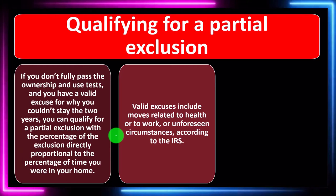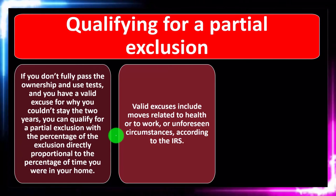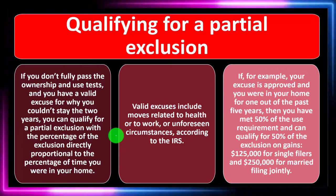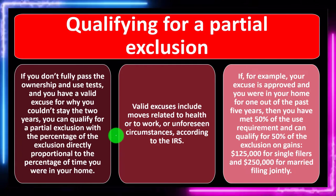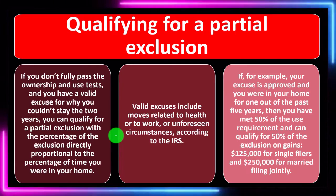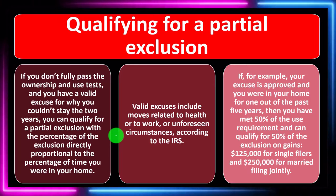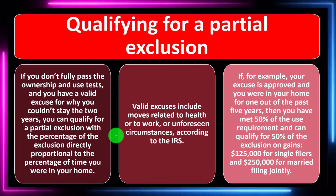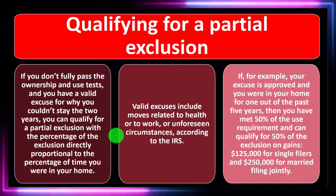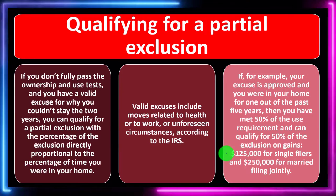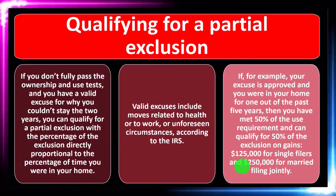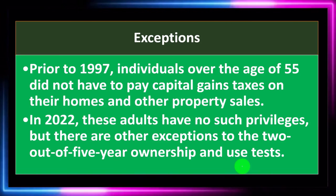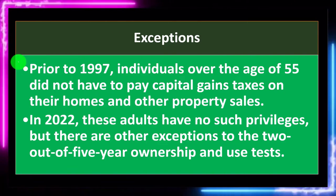Valid excuses include moves related to health, work, or unforeseen circumstances according to the IRS. If your excuse is approved and you were in your home for one out of the past five years, then you have 50% of your use requirement and can qualify for 50% of the exclusion on gains — that's $125,000 for single filers and $250,000 for married filing jointly. That's still a pretty hefty exclusion because again, you're not excluding the whole sales price, you're excluding the gain, so that might be enough in those circumstances.